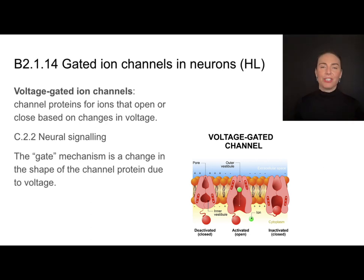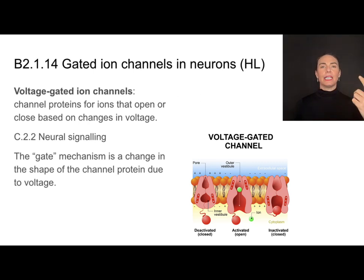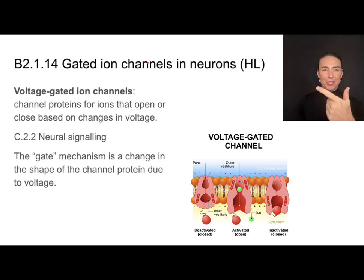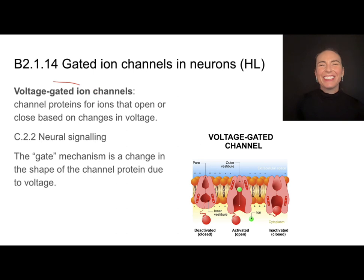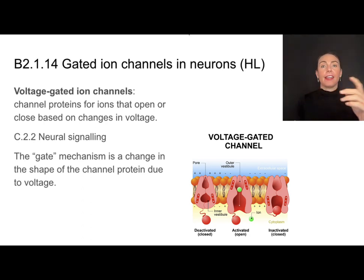Why is the protein changing shape? When you have changes in voltage — changes in charge on either side of the cell — it causes the protein to change shape and it can open or close. The form is this voltage-gated ion channel, and the function is that it can help cells move things in or out depending on the voltage, which changes at different points in a neuron.